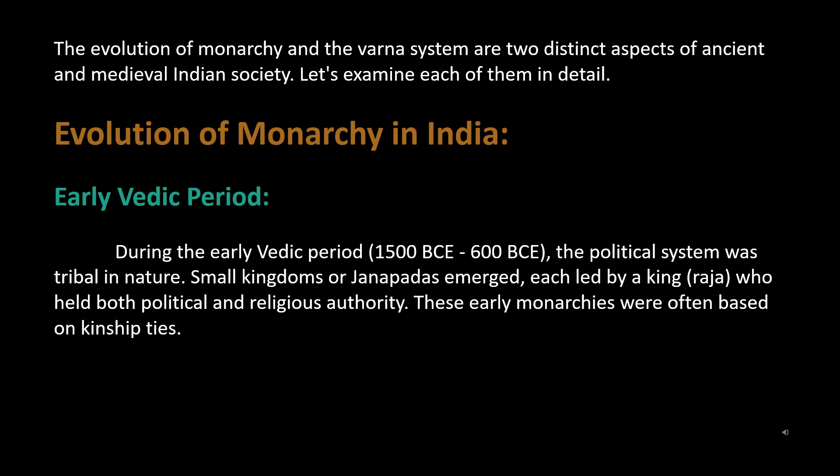During the early Vedic period (1500 BCE–600 BCE), the political system was tribal in nature. Small kingdoms or Janapadas emerged, each led by a king (Raja), who held both political and religious authority. These early monarchies were often based on kinship ties.